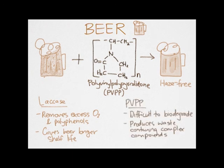Due to its structure, PVPP does not biodegrade easily and produces waste containing many complex compounds. Laccase on the other hand is a natural enzyme and its only byproduct is water, so is far more biodegradable and produces less waste. It can also be added to the wastewater produced from making beer to break down complex non-biodegradable substrates.